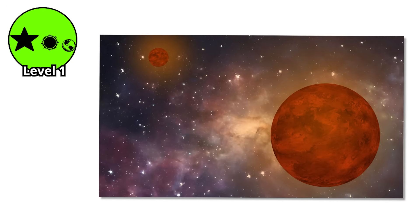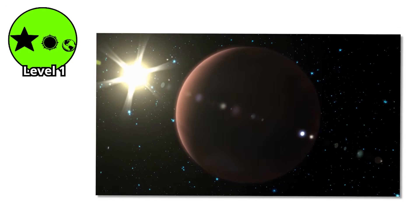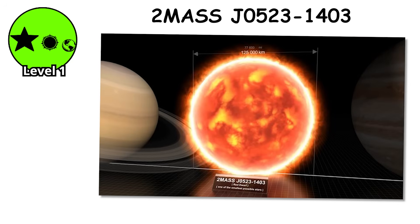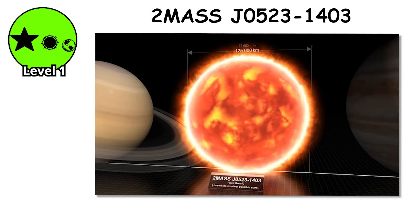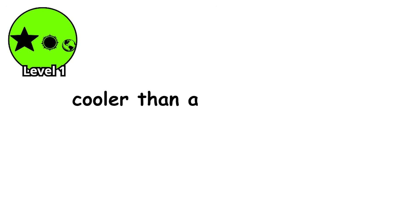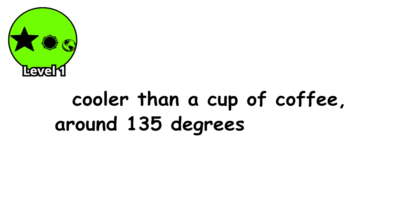They glow dimly in infrared, invisible to the naked eye, drifting through space like dying embers. The smallest brown dwarf ever discovered, 2MASS J05231403, is only about 90 times Jupiter's mass and has a surface temperature cooler than a cup of coffee, around 135 degrees Fahrenheit.